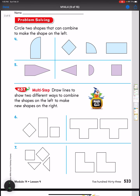Now it tells us to circle two shapes that combine to make the picture on the left. Look at number four — I see some curved lines and some straight lines. I know I need a shape with a curved line to go right here. Looking at the choices at the bottom, I have a square and a rectangle. The rectangle looks too big for this spot, so I would need the square to make that shape.